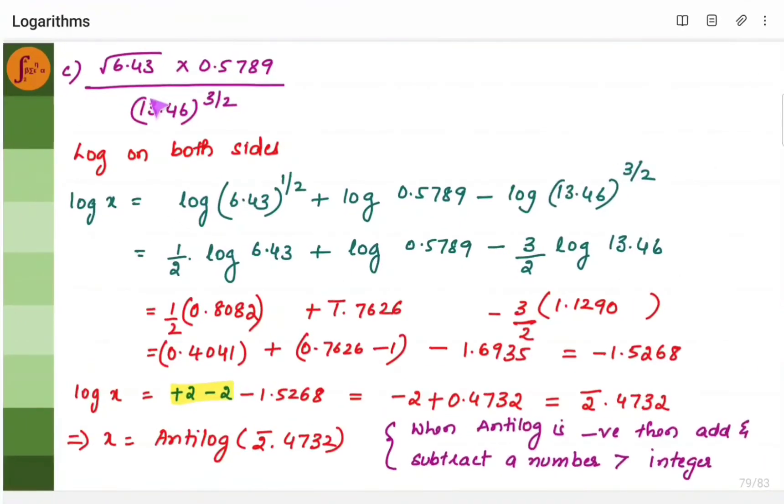Let us take this particular example. You have square root here. You have 3 by 2 also as a power. So square root is, square root you can write it as 6.43 to the power half. And 13.46 to the power 3 by 2.